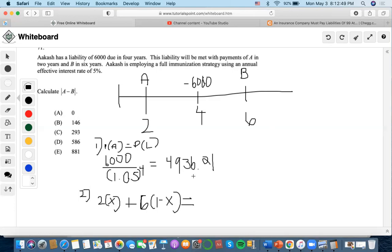So we have to find the duration of the liability in this case. So we already found its present value. All we need to do is find the numerator. Since the liability has 6,000, we can do 6,000 times 4 times V to the 4, over the present value, which is 4936.21.